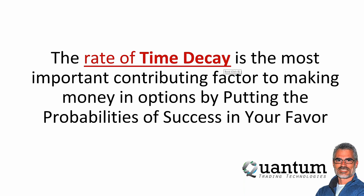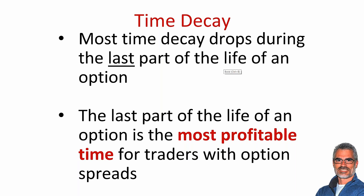The rate of time decay is the most important contributing factor to making money in options by putting the probabilities of success in your favor. When I put on a call spread or a put spread, it's not because I think the market's going to go up or down — it's because the mathematical probabilities are in my favor with the strategy I'm trading. Most time decay drops during the last part of the life of an option.